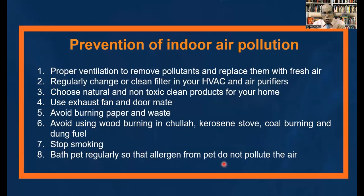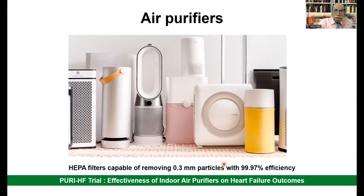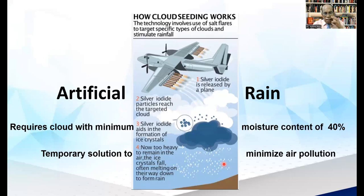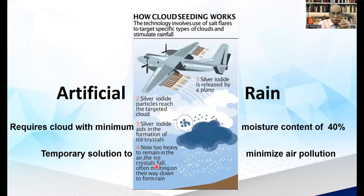For indoor pollution, all of us know the preventive measures, they are highlighted on this slide, but they require execution. Air purifiers are also available, and the Pure HF trial is ongoing to assess the effectiveness of indoor air purifiers on heart failure outcomes. Artificial rain is utilized as a temporary measure to minimize air pollution; it requires clouds with minimum moisture of 40%. Silver iodide is released from a plane, reaches the targeted cloud, and acts in formation of ice crystals. The ice crystals are too heavy to remain in the air, fall towards the ground, often melting on their way to form rain.